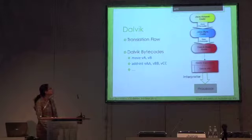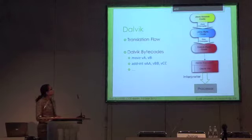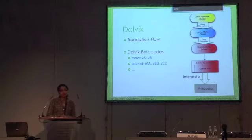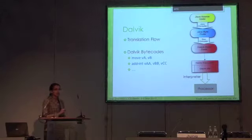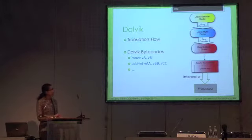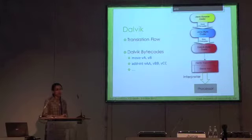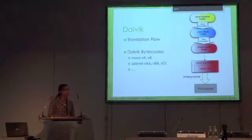Here you can see the translation flow for Dalvik. All Android applications are written in Java code. The Java compiler translates the Java source code into Java bytecodes — a set of instruction sets that can be understood by the virtual machine. A tool called the DX compiler then translates these Java bytecodes into Dalvik bytecodes. These are compiled into executable files run by the Dalvik virtual machine, and at the final stage the interpreter translates the bytecode into assembly code that can be used by the hardware.